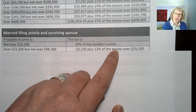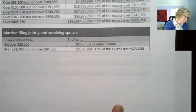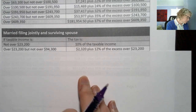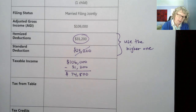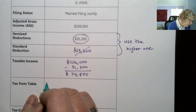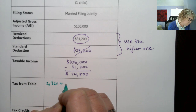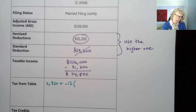They're talking about taxable income over that amount, meaning we take out the portion already taxed at 10%, which is calculated in that base amount. So the formula written out is: tax from table = $2,320 + 12% of the excess over $23,200. That means: $2,320 + 0.12 × (taxable income − $23,200).